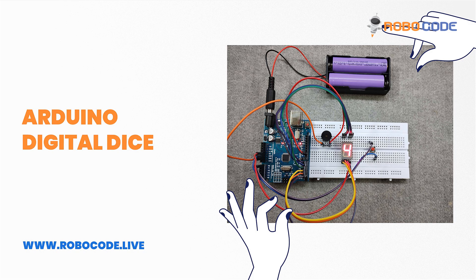With a few simple components and some basic coding, you can build your own electronic dice that randomly generates numbers and lights up LEDs to display the result. So let's get started.